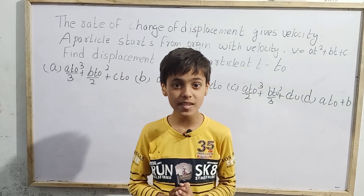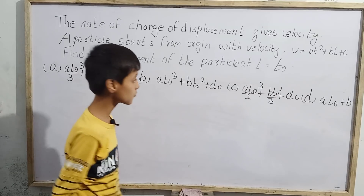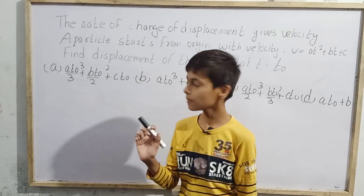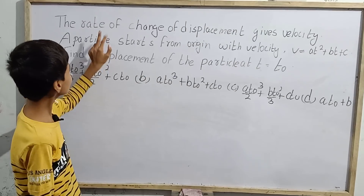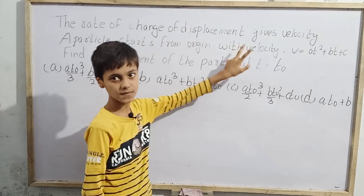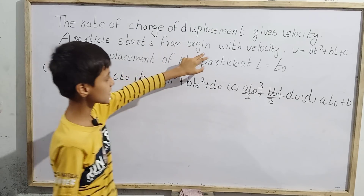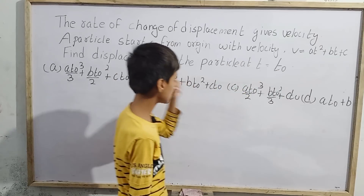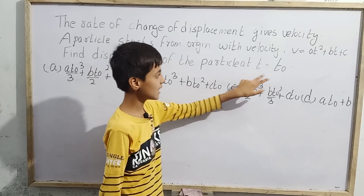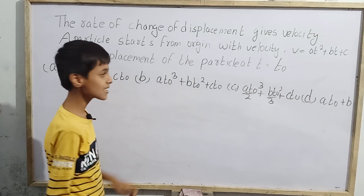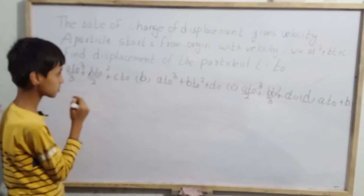I am Sarim Khan, I study in fifth standard, and today I'm back with my topic. Our question is from JEE Main: the rate of change of displacement gives velocity. A particle starts from the origin with velocity v = at² + bt + c. Find the displacement of the particle at t = t₀.